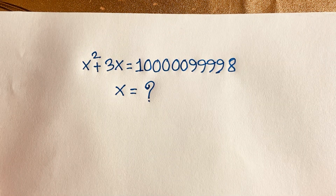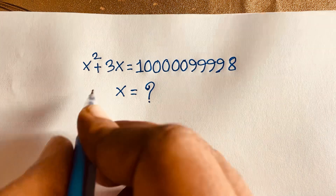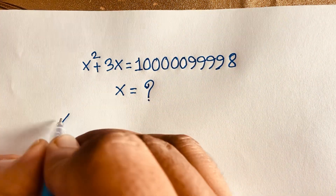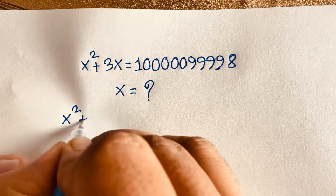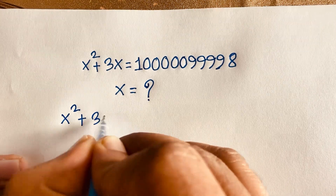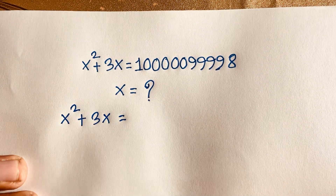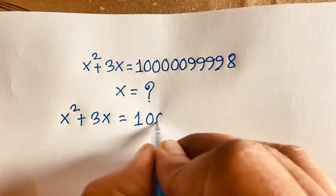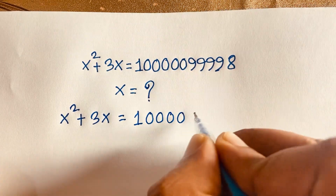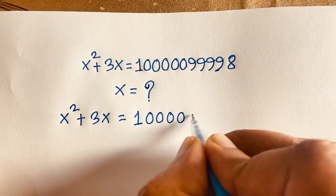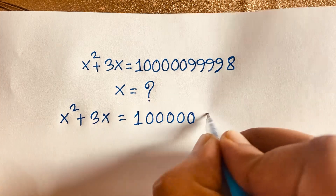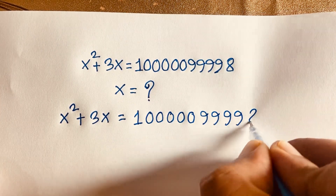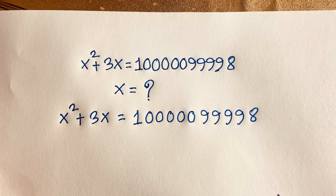So how to solve this question? Our question is x squared plus 3x is equal to 1,000,099,998. This is our question, and I take it as the first equation.